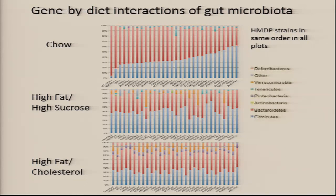The biggest differences are in less abundant phyla. Verrucomicrobia — basically Akkermansia muciniphila — come up dramatically on some diets and are hardly present on others. Proteobacteria also show big changes. So there are big, big changes due to diet. You're looking at genetics, but it's always in the context of environment and diet.